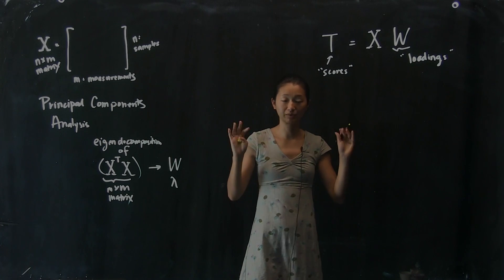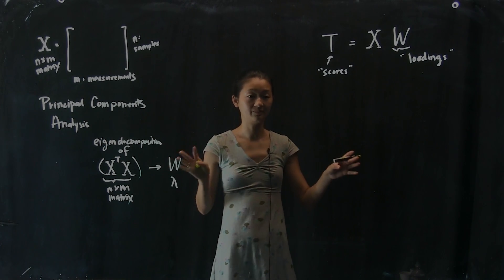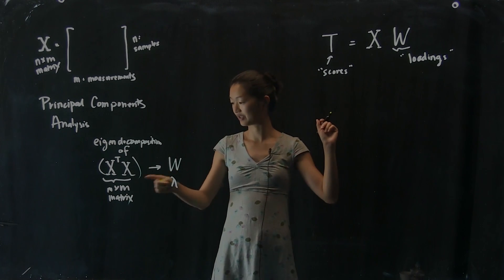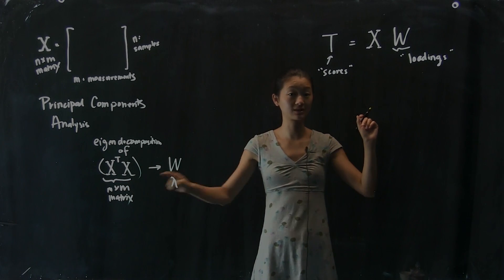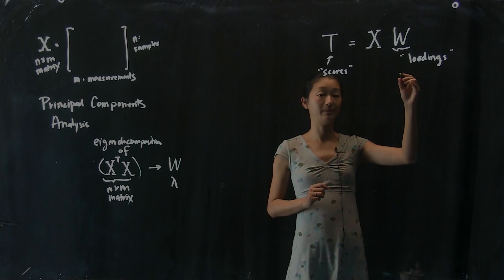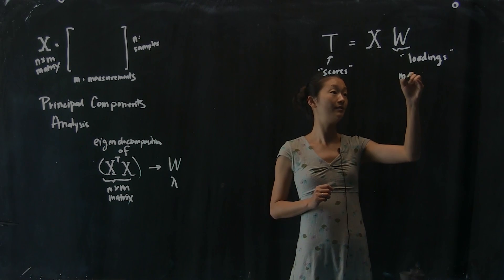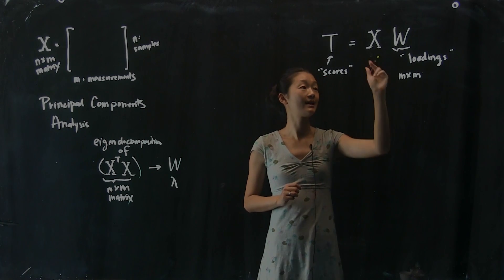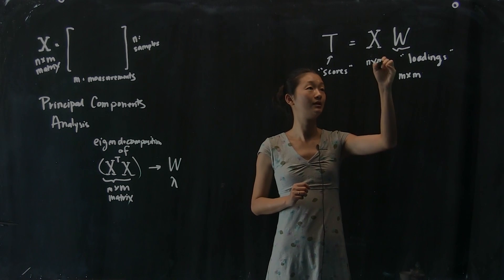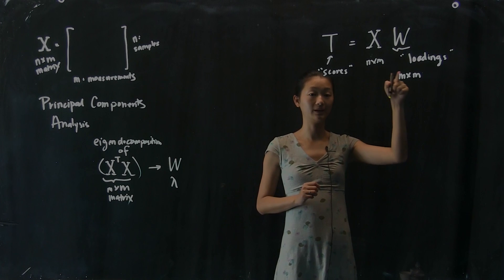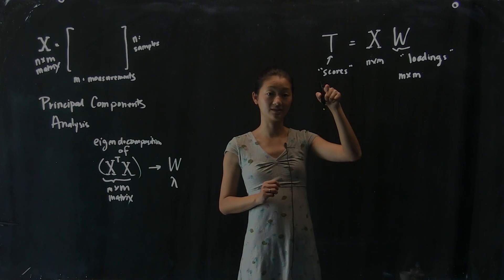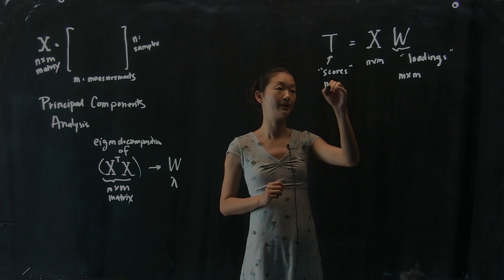So let's just remind ourselves of what this actually means. Now, what is the size of w? Well, since w are the eigenvectors of an m by m matrix, then w must be m by m as well. So w is m by m. So if you take an n by m matrix x and multiply it by an m by m matrix w, that means the size of t should also turn out to be n by m.